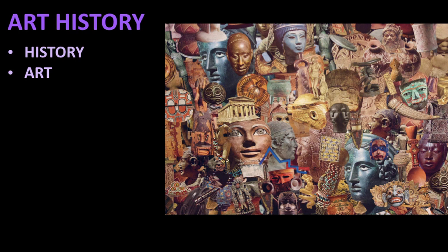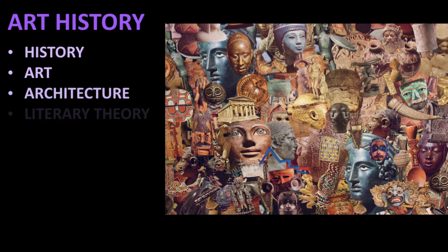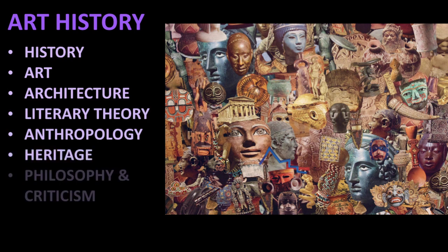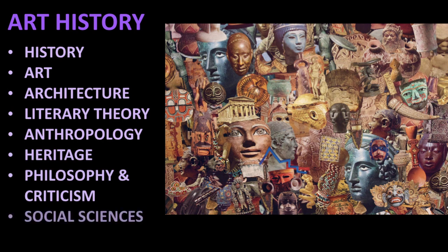Over time, Art History has come to incorporate a large number of different disciplines, and I've just listed a few of them here. You can think about Art History in terms of history, in terms of the art itself - techniques and styles. Architecture, which is an important part of visual culture. We use techniques of literary theory and adapt them to study imagery. Anthropology, which is the study of the human condition, human history, human civilization. Issues of heritage, aspects of philosophy and criticism, all the social sciences. If something can exist culturally, it can be expressed through art.